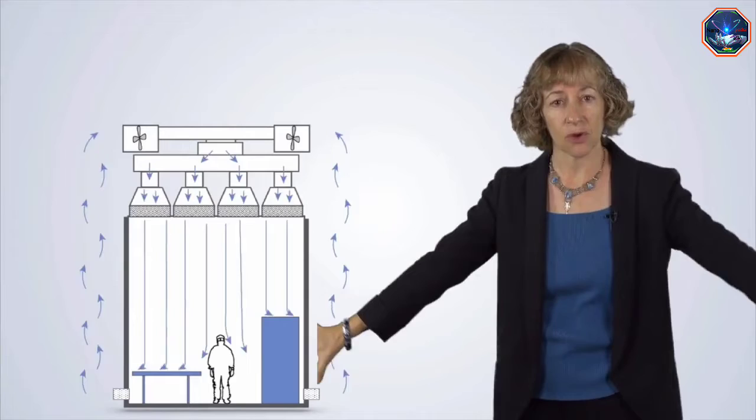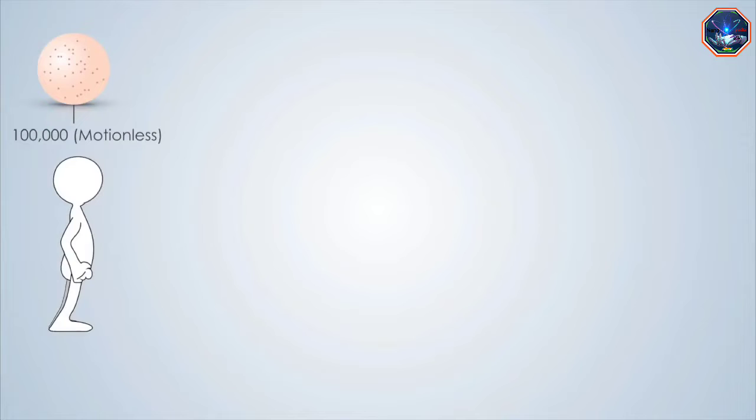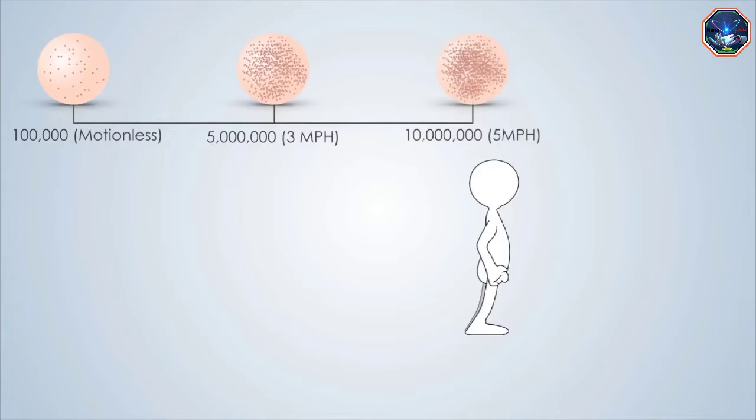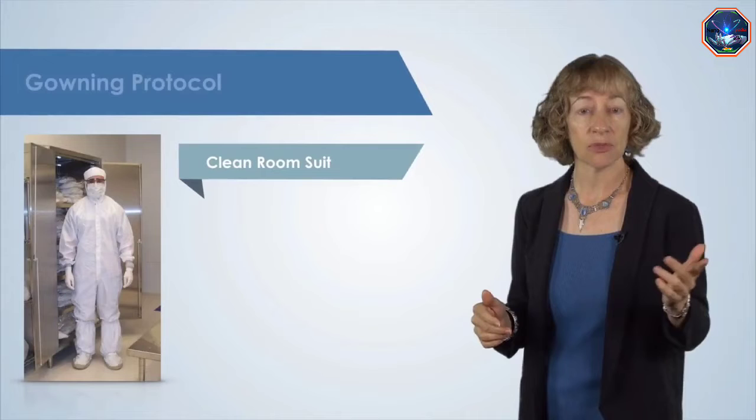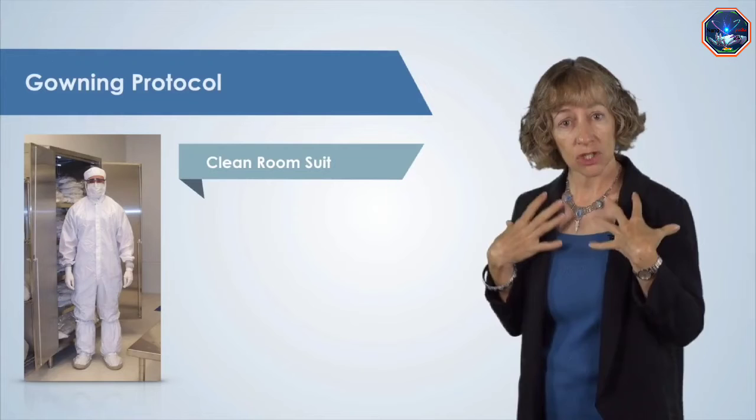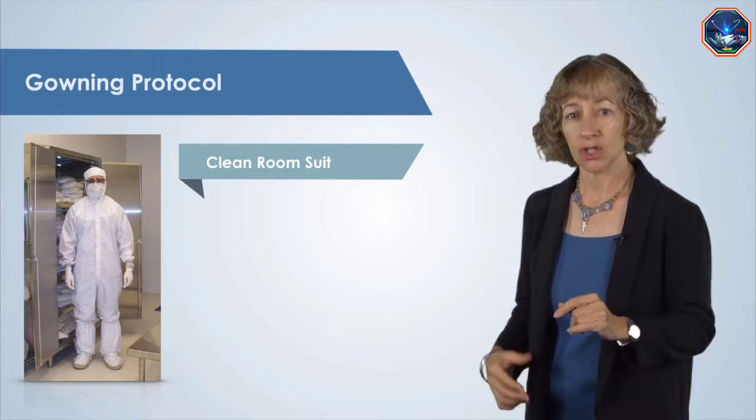What causes airborne particulate contamination in a clean room? Mostly it's the people. Even motionless people shed particles, and if you start moving around you shed millions of particles per minute. Personnel working in clean rooms must practice particle control. They enter and exit through airlocks and a gowning room at higher pressure than the outside, ensuring that clean air flows out rather than dirty air flowing in. People must wear special clean room suits that don't shed particles, contain particles shed from clothing underneath, and are even designed to trap contaminants naturally generated by a person's skin and body.